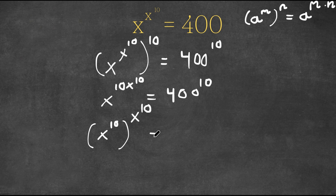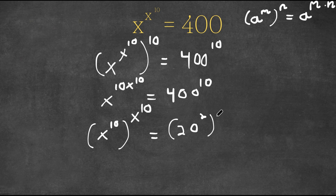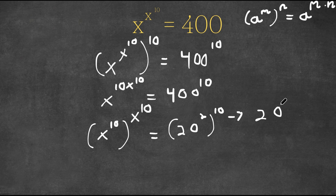Now 400 is equal to 20 squared, so we have 20 squared to the power of 10. And remember, if we have something in the form a to the power of m to the power of n, this is equal to a to the power of m times n. So this is going to equal 20 to the power of 2 times 10, which is 20.